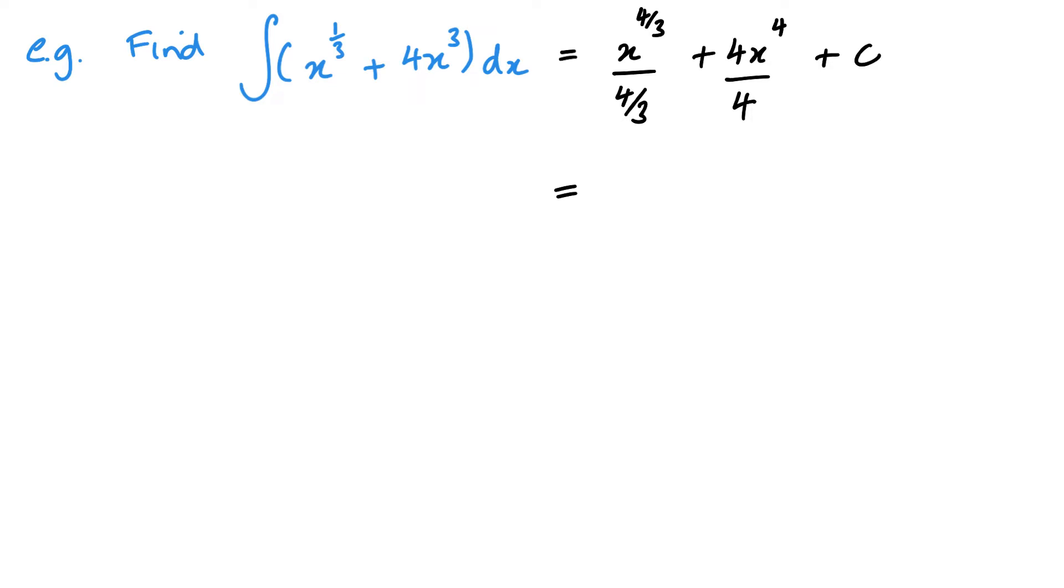Then I go ahead and simplify things, essentially sort out a little bit of this mess. So we get three x to the four thirds over four plus my fours will cancel, leaving me x to the power of four plus c. And that is it.